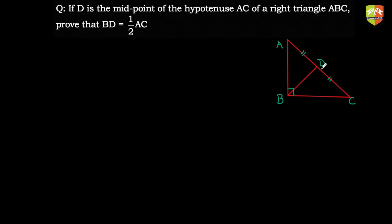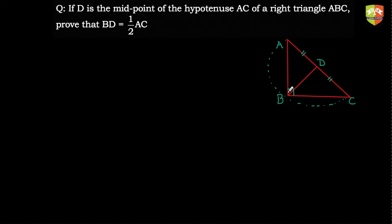On first appearance, it's difficult to understand how BD is related to AC. But if you have studied circles and know the property that the angle subtended in a semicircle is always 90 degrees, then it's a one-line proof — since DA equals DB equals DC as radii. But we are not going to take that route; we are going to use congruence.